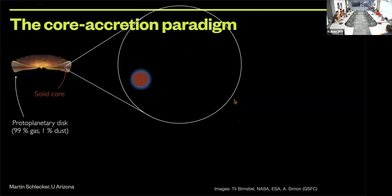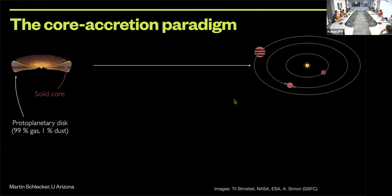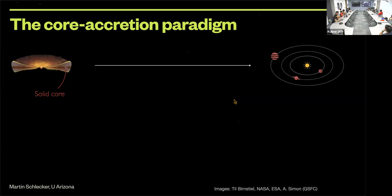This typically happens at several locations in a protoplanetary disk, so we end up with systems of planets. Once they grow to sufficient masses, they interact with the surrounding gas and dust, leading to planet migration—planets change their orbits, and in most cases orbits shrink, so planets move closer to the host star. When we detect them, this is usually not where we think they formed.